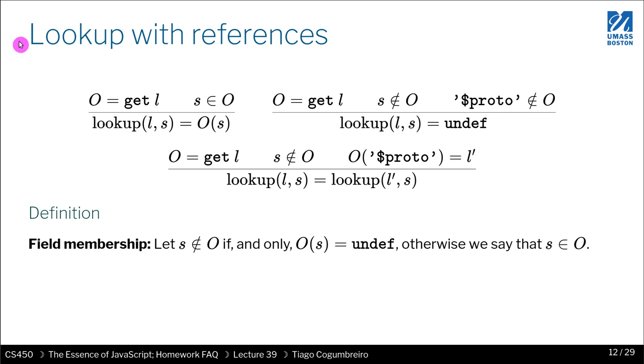And then we can even formalize the lookup function. And this is basically the same code that you will see in environment get if you look at it. So what we do is we're defining a function in branches. So we're saying if the field is not in the object, which is saying here, but it does have a field proto, then you perform a lookup on the parent.